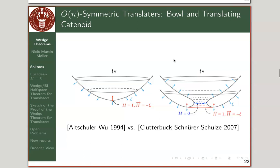For the gluing constructions I mentioned, you take a bowl translator, insert it in the middle, and add genus. This gives higher-genus examples with three ends.